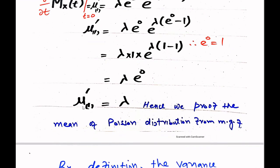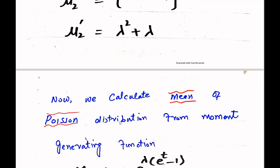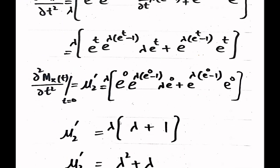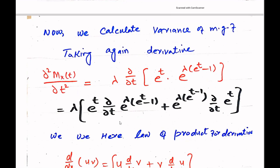Now we calculate the variance. We take the second derivative of the MGF. The first derivative was λe^t · e^(λ(e^t - 1)), and we now differentiate this again with respect to t.